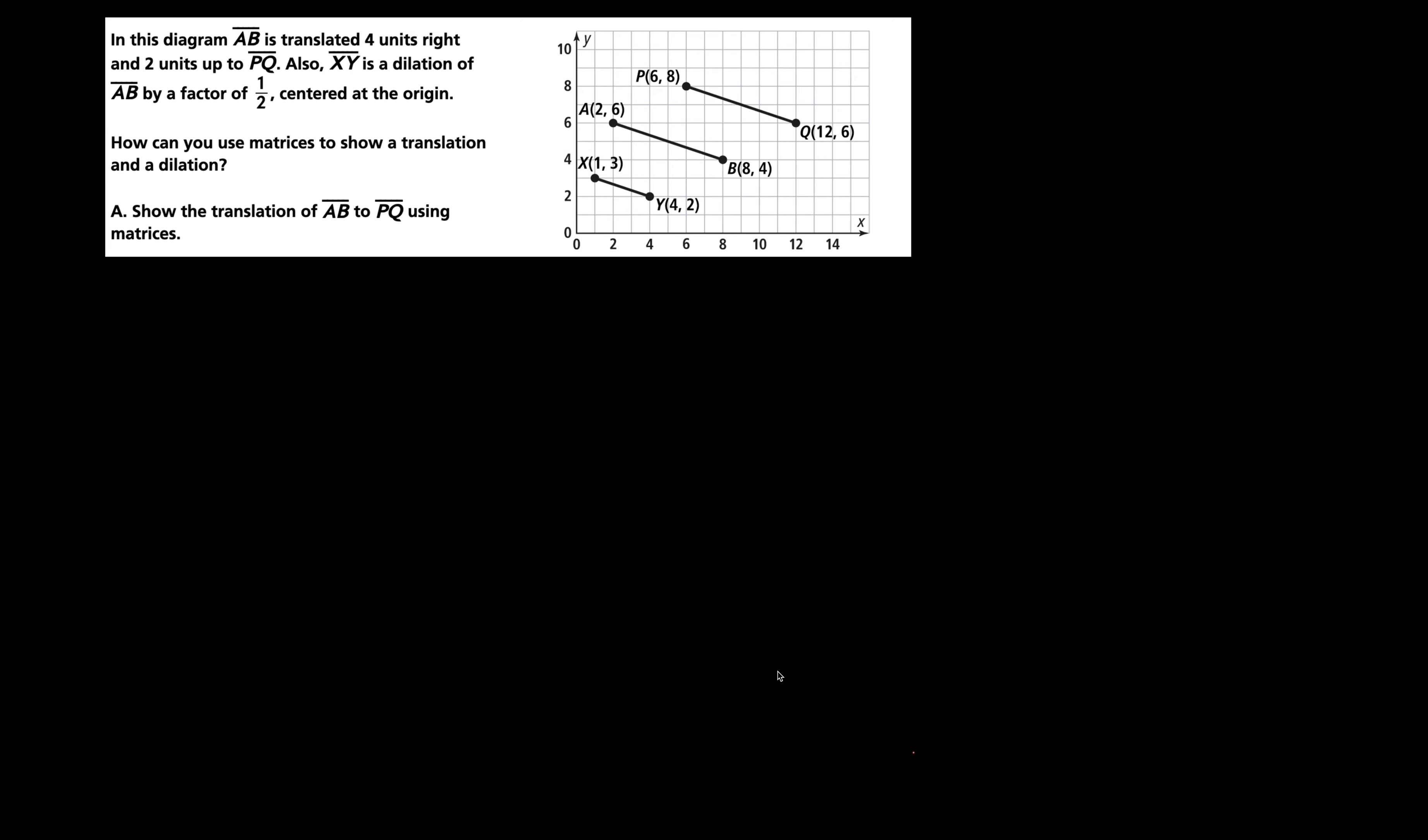How can you use matrices to show the translation and dilation? Let's show the translation of AB to PQ. We have points here on AB: point A is 2,6 and B is 8,4. So you can use matrices for the line. This is point A, this is point B, this is X, and this is Y. Again, using matrices to organize our thought process.